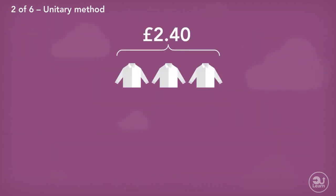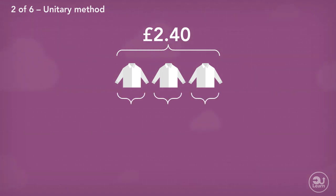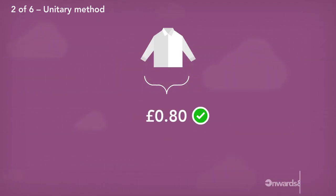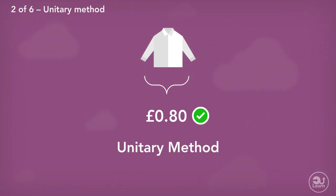How would we find the cost of one shirt? Once again, quite straightforward. If three shirts cost £2.40, then to find the cost of one, we would need to break the £2.40 into three equal parts. Dividing £2.40 by three gives the price of each shirt, which is 80 pence. We have successfully found the price of a single unit of clothing. When calculating the worth of one of something, or a unit, you may hear this method referred to as the unitary method, as we are finding the amount of a unit. Using this method, we can find the answer to the last questions easily, because we now know that each shirt costs £0.80.